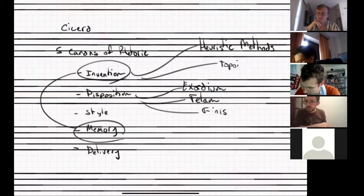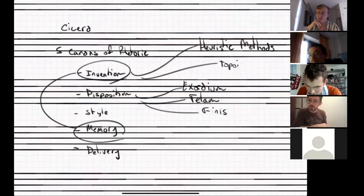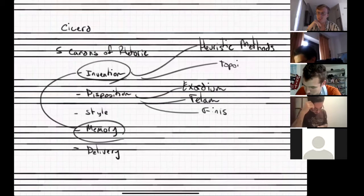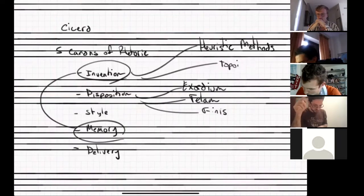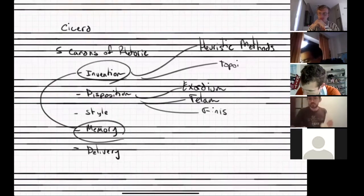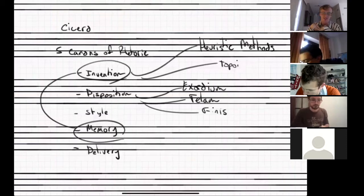A student points out that the story about writing and memory is actually from Plato's Phaedrus — a conversation between the king of Egypt, Thamus, and another figure whose name is Theuth. He offers to send the text on the channel for everyone to check out. The instructor thanks him and asks if there are any questions on the five canons of rhetoric: invention, disposition, style, memory, and delivery.